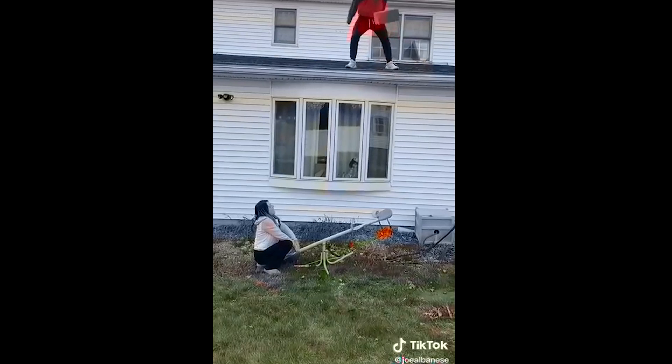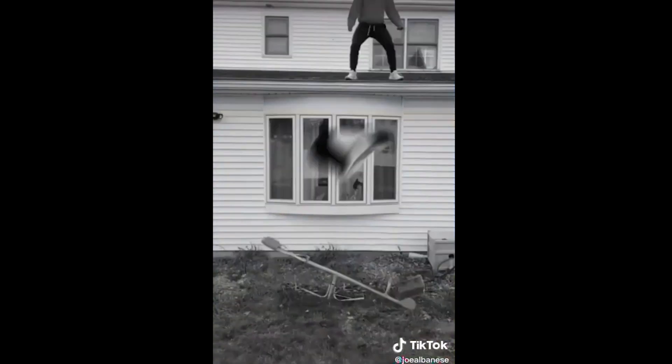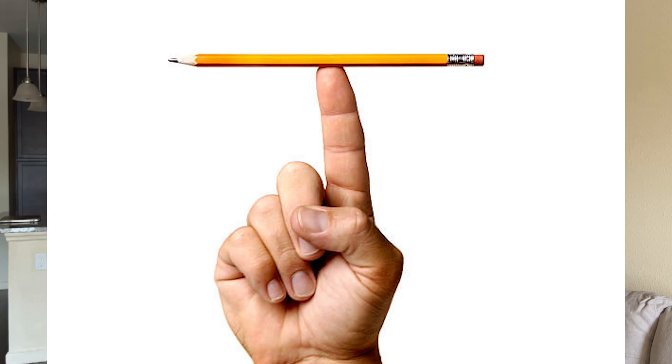Every object has a CG, so theoretically you can balance anything. How hard or easy it is to balance an object depends on several factors. An example of CG would be balancing a seesaw or a rubber eraser on a pencil — you have to find the perfect point to balance those objects, or it's not going to work.